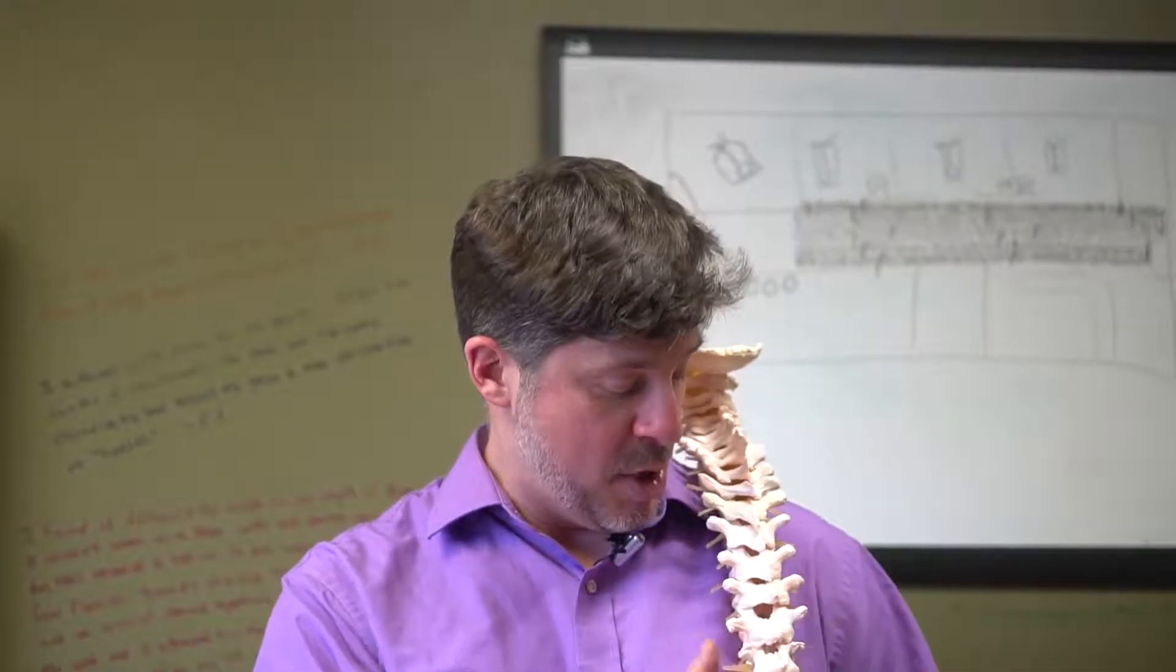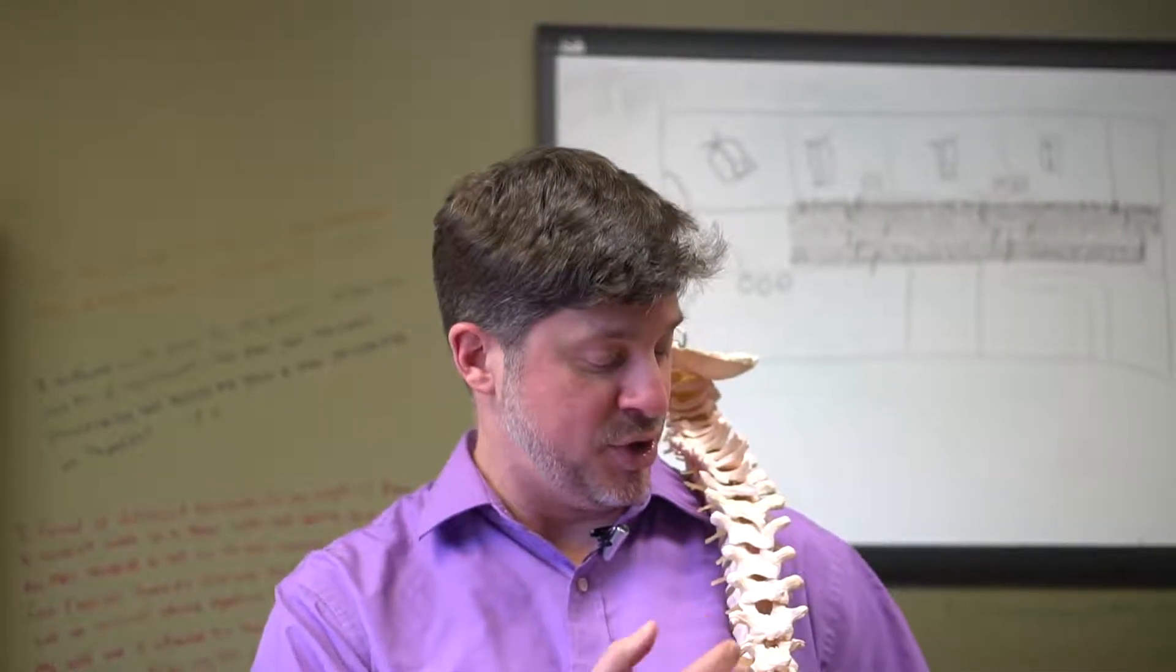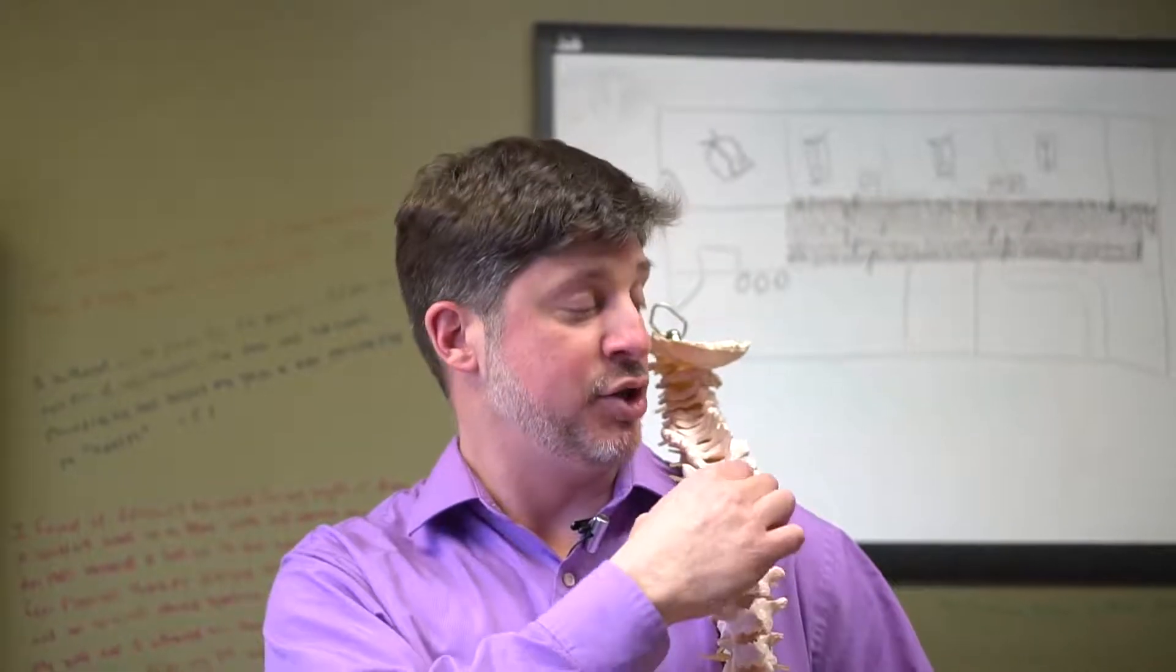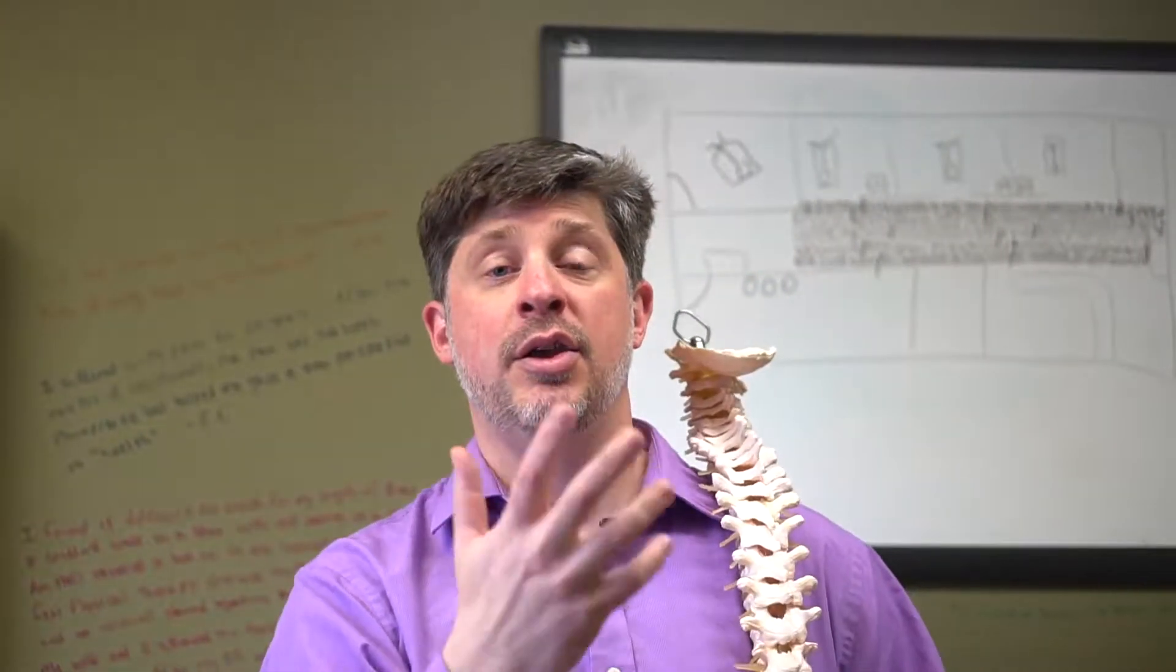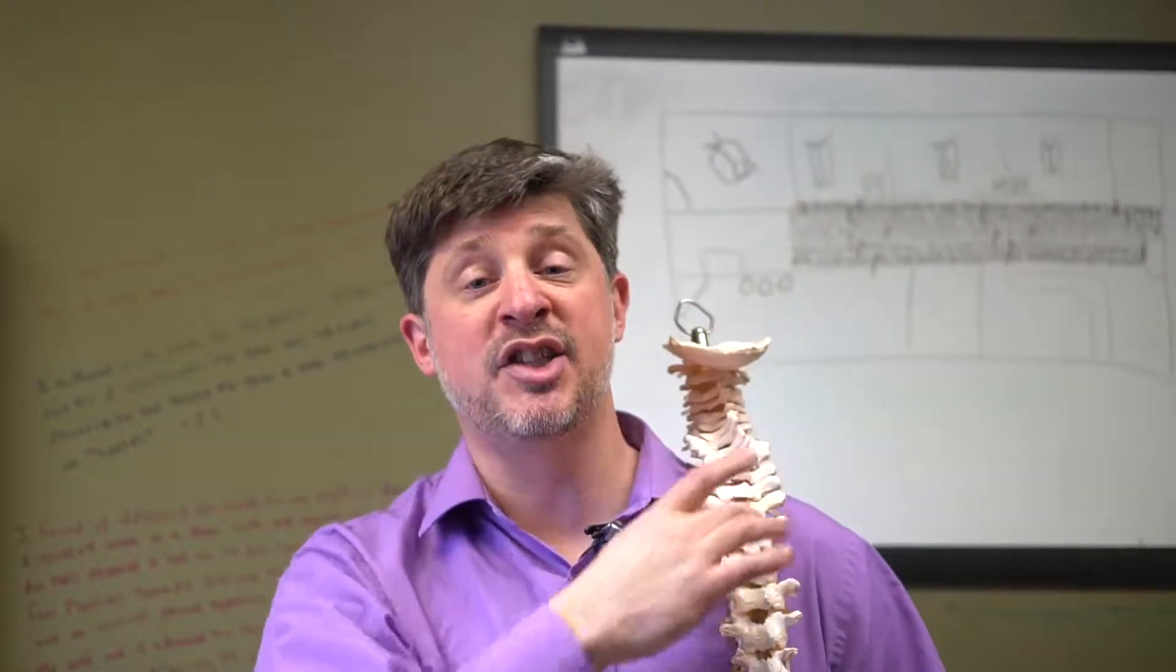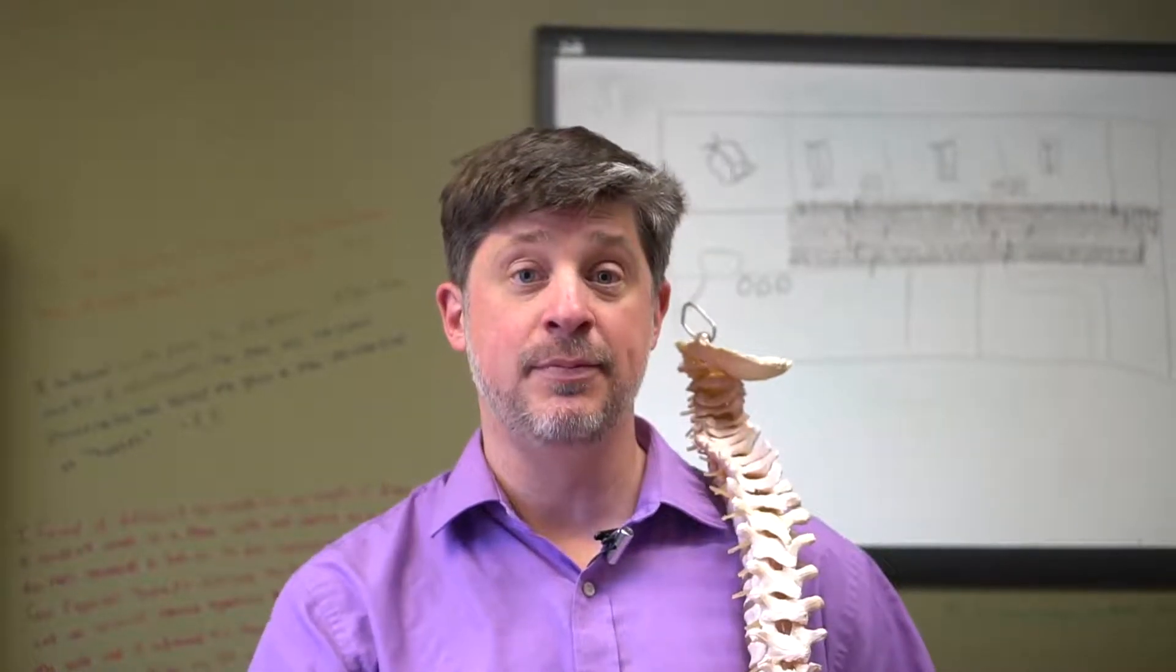So here we have a model of the spine and we can see our nerve system which is encased and housed within your spine and your brain. Your nerve system is made up of your brain, spinal cord, and your nerves.